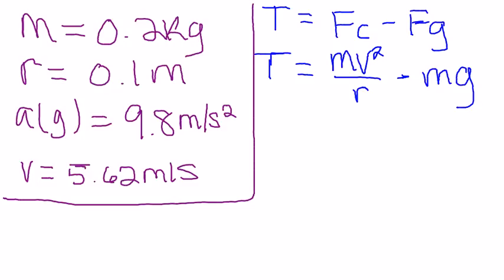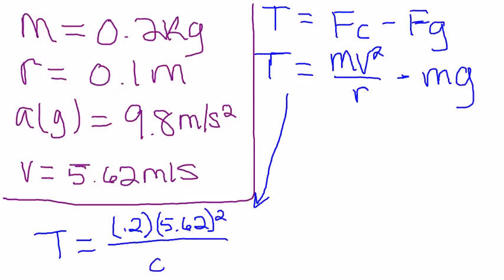So now we're going to plug in the values for that. I'm going to bring that down here so we have more room. Tension is equal to mass, which is 0.2 kilograms, times velocity, which is 5.62, and we're going to square that over the radius, which is 0.1 meters. Then we're going to subtract mass times gravity from that. So mass again is 0.2 and gravity is 9.8.